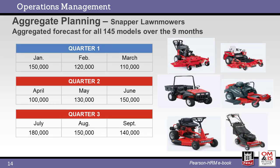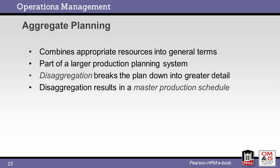In another example for Snapper lawn mowers, aggregate plans cover 145 models over 9 months. Notice that this is a summarized plan with monthly forecasts. The aggregate plan, as the name suggests, is a summarized plan. Operations managers must disaggregate the plan to define specific product plans to create master production schedules for each plant.